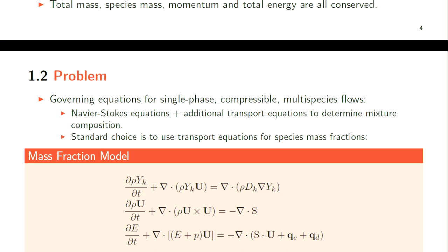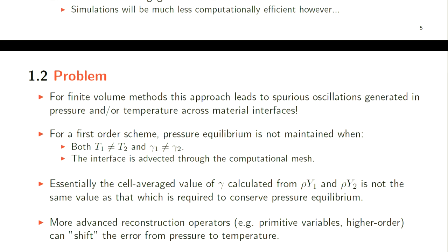A brief review of fundamentals: the governing equations for single-phase compressible multi-species flows are the Navier-Stokes equations augmented by additional transport equations. The standard choice is to use transport equations for species mass fractions. The first equation is conservation of species mass, then conservation of energy. The nice thing about this set of equations is they're fully conservative - total mass, species mass, momentum, and total energy are all conserved. But there are problems when you discretize them on a computer.